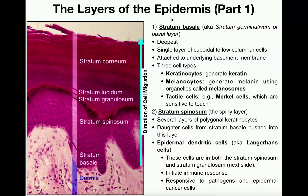The epidermis is the most superficial layer of the integumentary system or your skin. So when you look at somebody's skin, any part of it, the part that you're actually seeing that is closest to the surface or on the surface is the epidermis. The dermis, which we'll cover in the next video, is deep to that — you cannot see the dermis. The epidermis is composed of a type of tissue called keratinized stratified squamous epithelium.